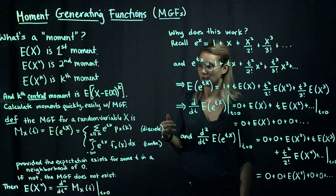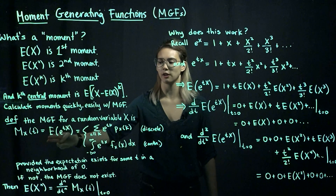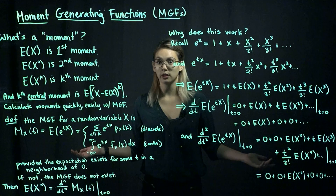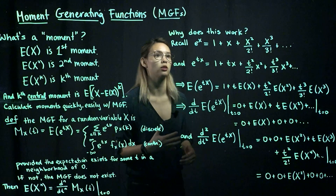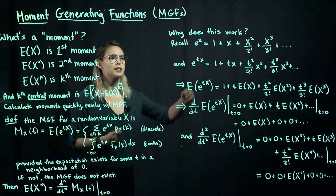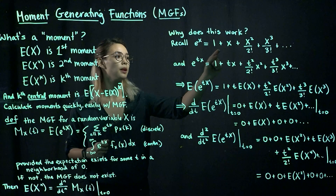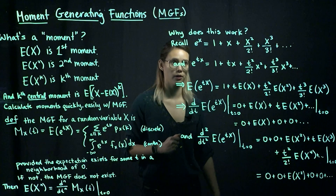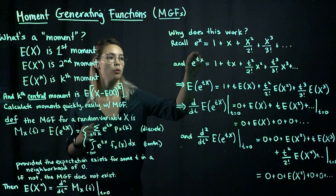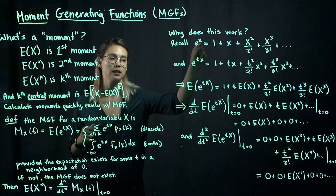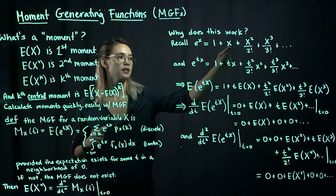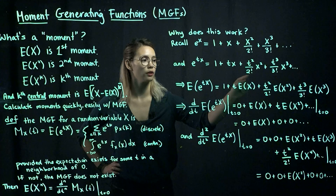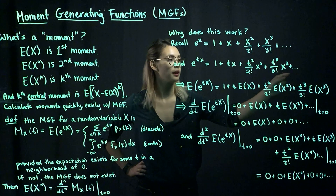For a lot of students and people, this looks very strange. It's like, why is the MGF defined as the expected value of e to the tx? It kind of looks like a magical thing, and then you just do this weird derivative and evaluation, and all of a sudden you have the moment. So let's talk about why this actually works. If you remember back to calculus, e to the x is equal to 1 plus x plus x squared over 2 factorial plus x cubed over 3 factorial plus x to the 4 over 4 factorial, and just keep going forever. So if we want e to the tx instead of e to the x, we write tx instead of x throughout, so e to the tx equals 1 plus tx plus t squared x squared over 2 factorial plus t cubed x cubed over 3 factorial, and so on.